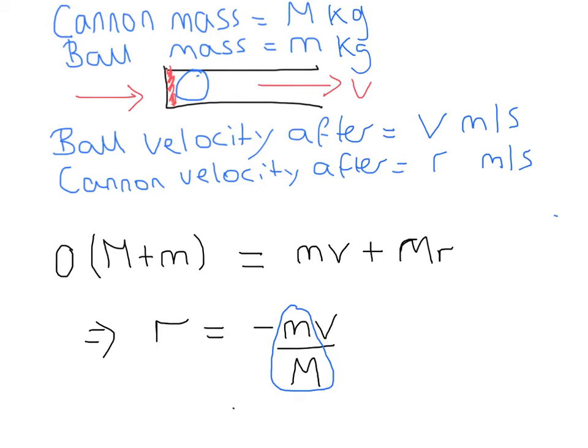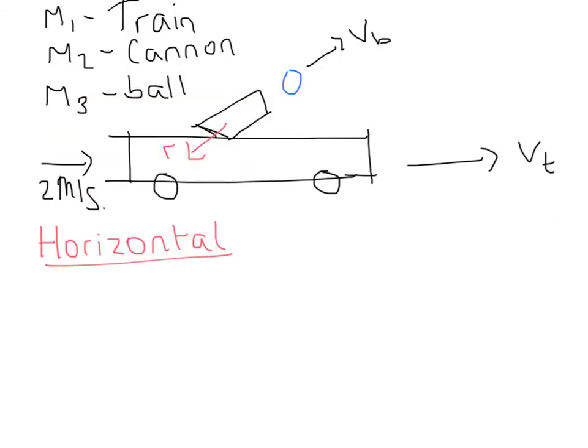Okay, so let's make this a little bit more complicated. Okay, so in this one we're going to look at something slightly more complex. So we've got some notation. So M1 is the mass of the train, M2 is the mass of the cannon, M3 is the mass of the ball.